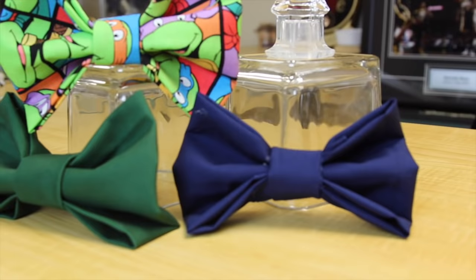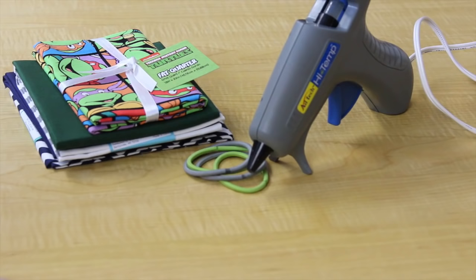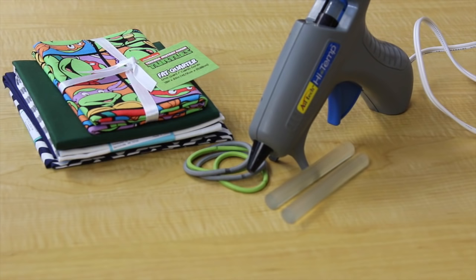The first thing that you're going to need is some fabric. I bought these back squares at Walmart. Some hair ties, some hot glue and the hot glue gun. And then you're also going to need some scissors.